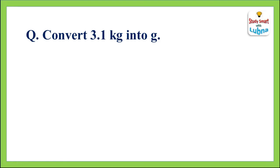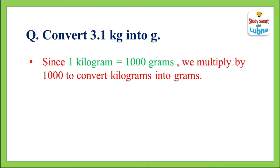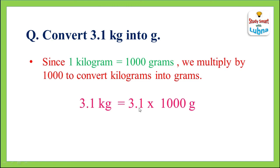Convert 3.1 kilograms into grams. We already know that 1 kilogram is equal to 1,000 grams, so we will multiply 3.1 by 1,000. We have to shift its decimal point 3 places to the right-hand side, but after the decimal point we have only 1 digit, so we will put 2 zeros by our own. The answer is 3,100 grams. So 3.1 kilograms is equal to 3,100 grams.